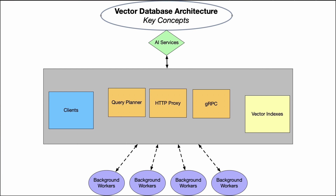Let's walk through the key components that make up a vector database architecture. On the left here we have various client applications that users interact with to access functionality. This could include the SDK for languages like Python, Go, and Rust, as well as a CLI and a web UI.